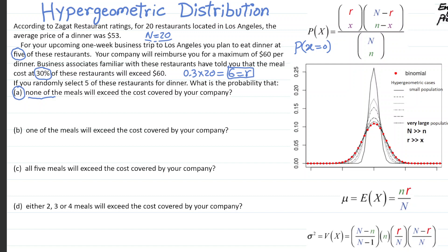You don't want any expensive restaurants to be selected. In the numerator, you have R choose X, where R is six. So you have six expensive restaurants and you don't want to select any of them, so X is zero. N is the total number of restaurants, 20, and subtracting the six expensive ones gives 14 inexpensive restaurants. You're running a trial of five because you're selecting five restaurants, so small n is five.